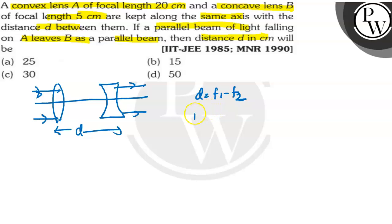By using the formula, 1 upon f will equal 1 upon f1 plus 1 upon f2 minus d by f1 f2.